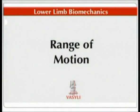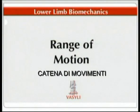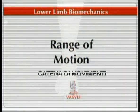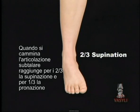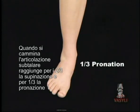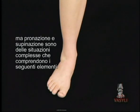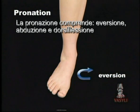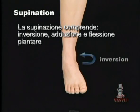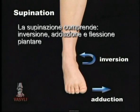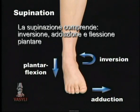Range of motion. Motion at the subtalar joint is normally two-thirds supination and one-third pronation. Both pronation and supination are triplanar motions. Pronation comprises eversion, abduction and dorsiflexion. Supination comprises inversion, adduction and plantarflexion.